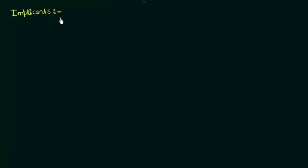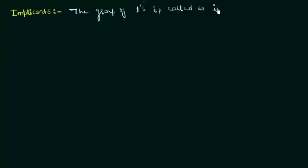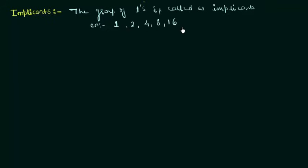What are the implicants? We have already done the K-map of three variables and in that we did the groupings. The groupings of ones, and that group is called as the implicants. So the group of ones is called as implicants. It can be a group of a single one, two ones, four ones, eight ones, or sixteen ones, depending upon the variables.